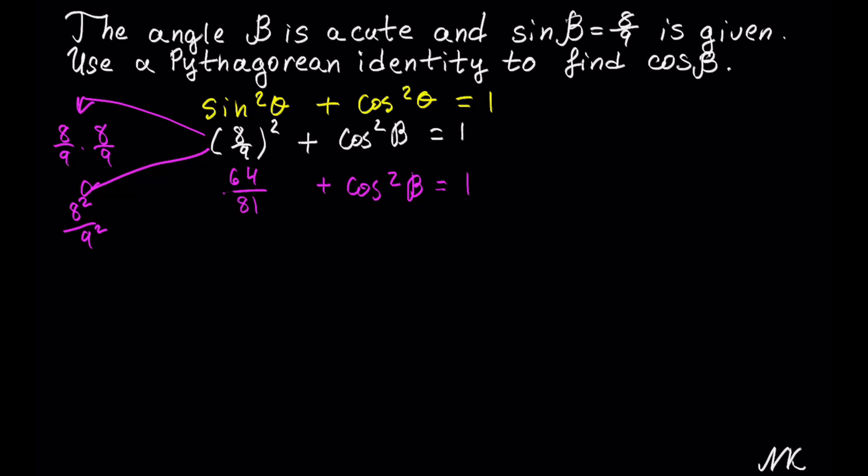In order to solve for cosine, we have to do the inverse of positive 64/81, which is negative 64/81.